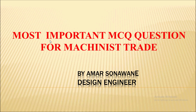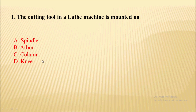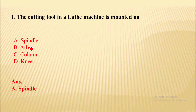We start with the Machinist trade. First question: the cutting tool in a lathe machine is mounted on — four options are given, and the correct answer is the spindle. The cutting tool in a lathe machine is actually mounted on a spindle. If it is a milling machine, then the correct answer would be arbor.